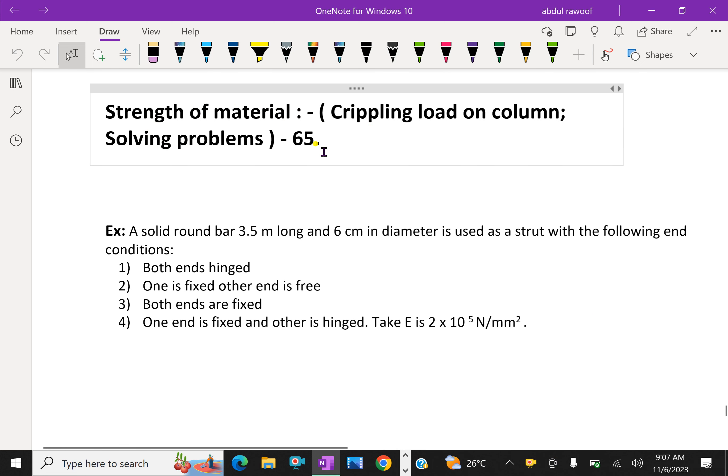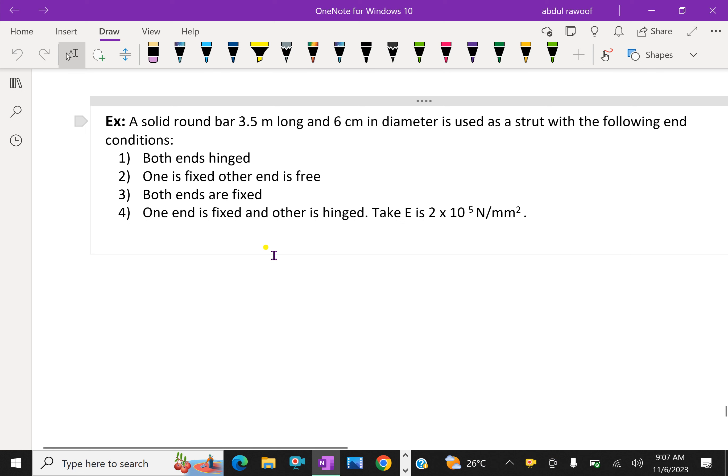Welcome to aminacademy.com. In strength of material regarding crippling load on column, let us do some solving problems. Look at this example. A solid round bar of 3.5 meter long and 6 centimeter in diameter is used as a strut with the following end conditions.